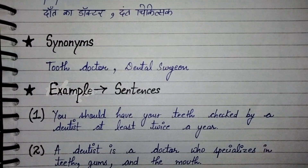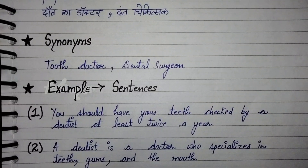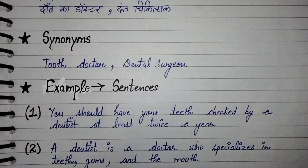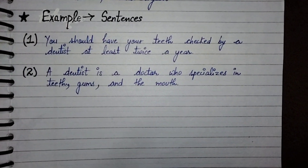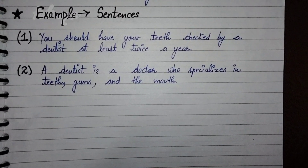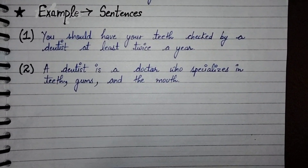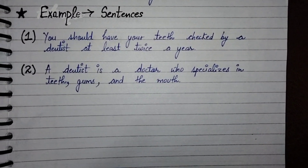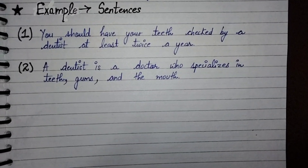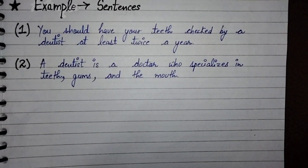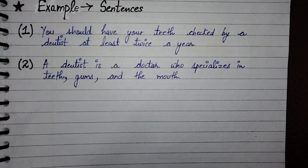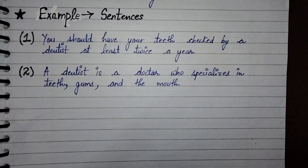Synonyms of dentist are 'tooth doctor' and 'dental surgeon.' Example sentences: First — you should have your teeth checked by a dentist at least twice a year. Second — a dentist is a doctor who specializes in teeth, gums, and the mouth.